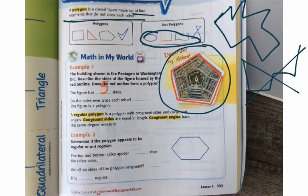Do they ever cross each other? No, they don't cross each other. So this figure is a polygon, a regular polygon.